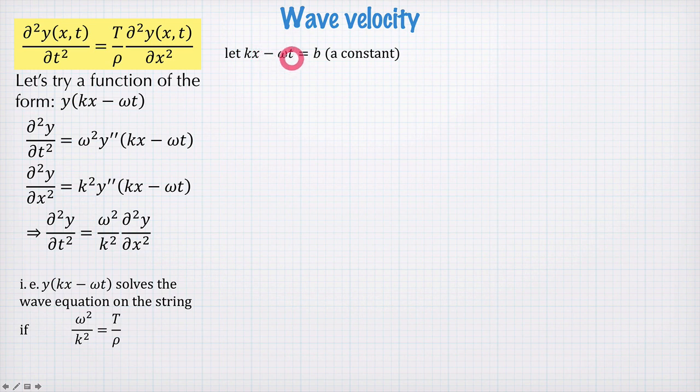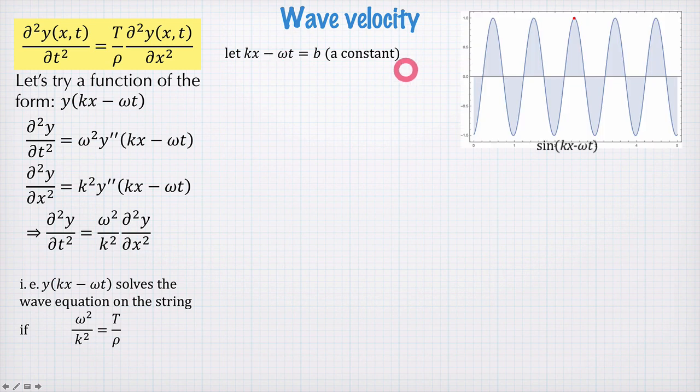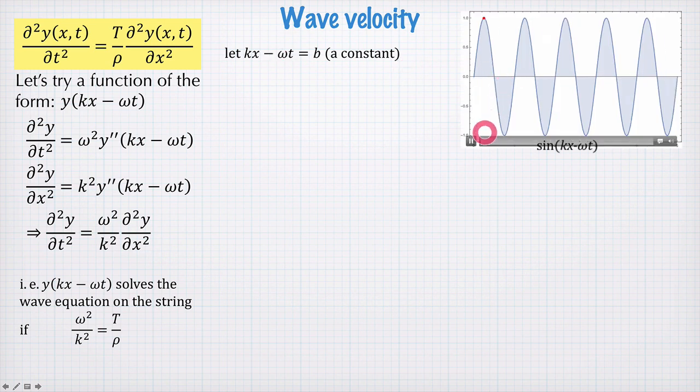So you can see that as t increases, ωt, negative ωt will be going down and in order to counteract that, then kx must be increasing. So as time increases, x increases. So in this way, we have a wave evolving in the positive direction like this.